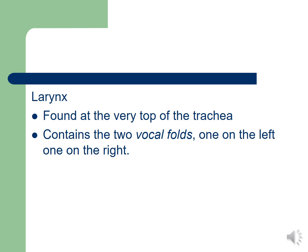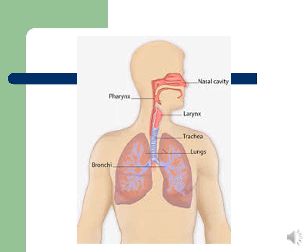The larynx is located at the very top of the trachea, in the region of the Adam's apple. It contains two vocal folds — one on the left and one on the right. We will share a visual of the larynx with you.